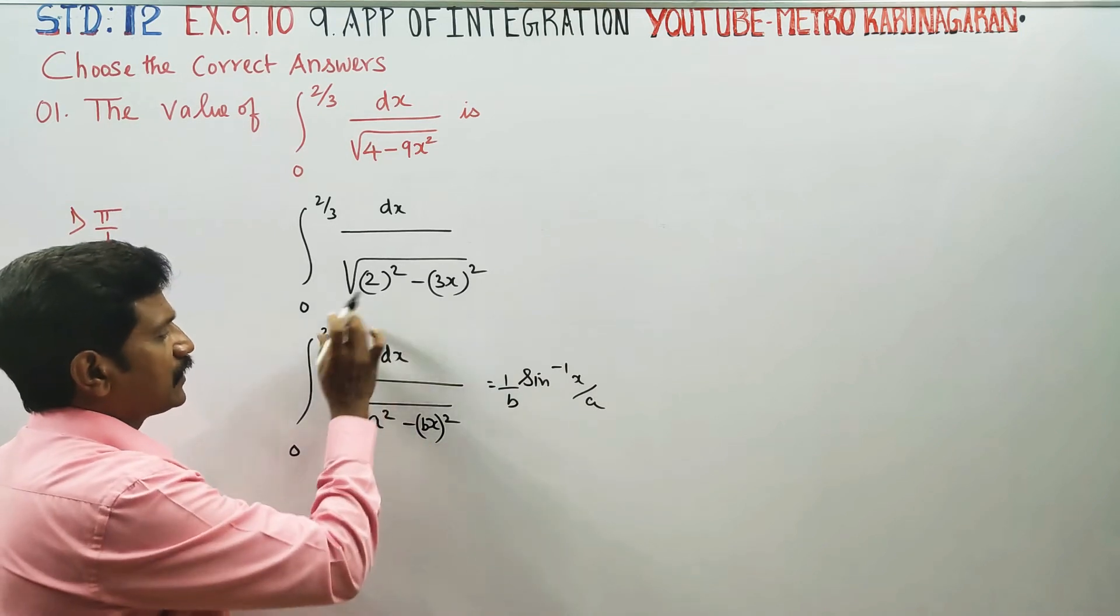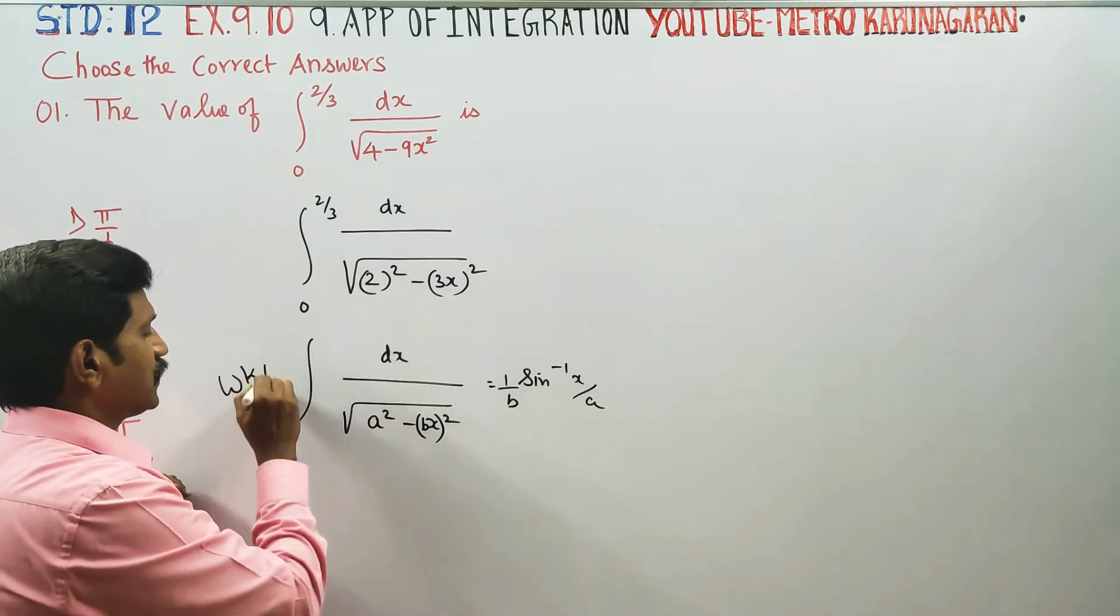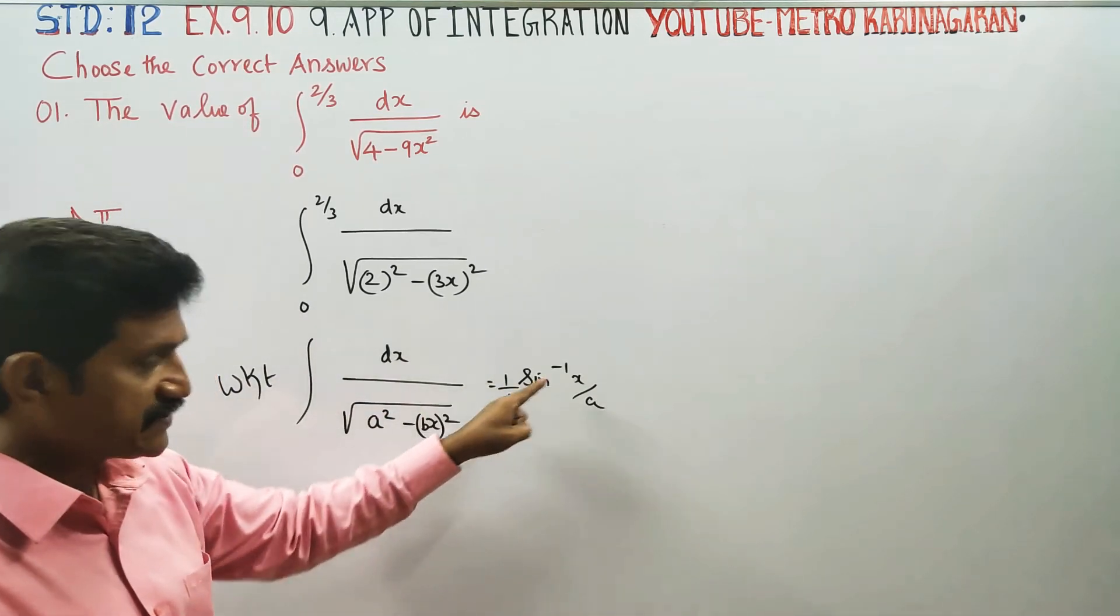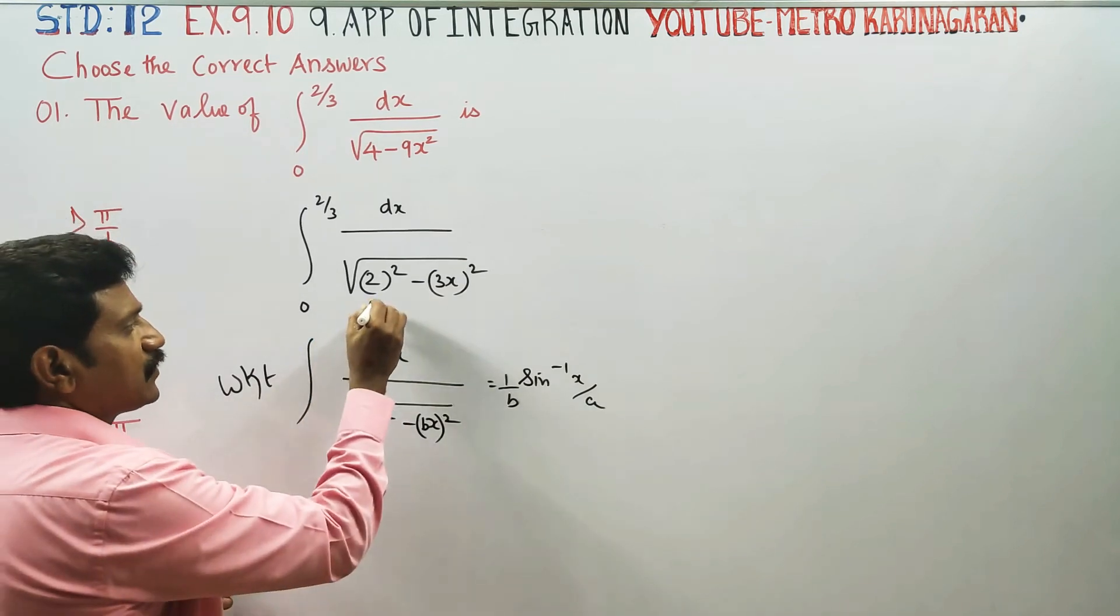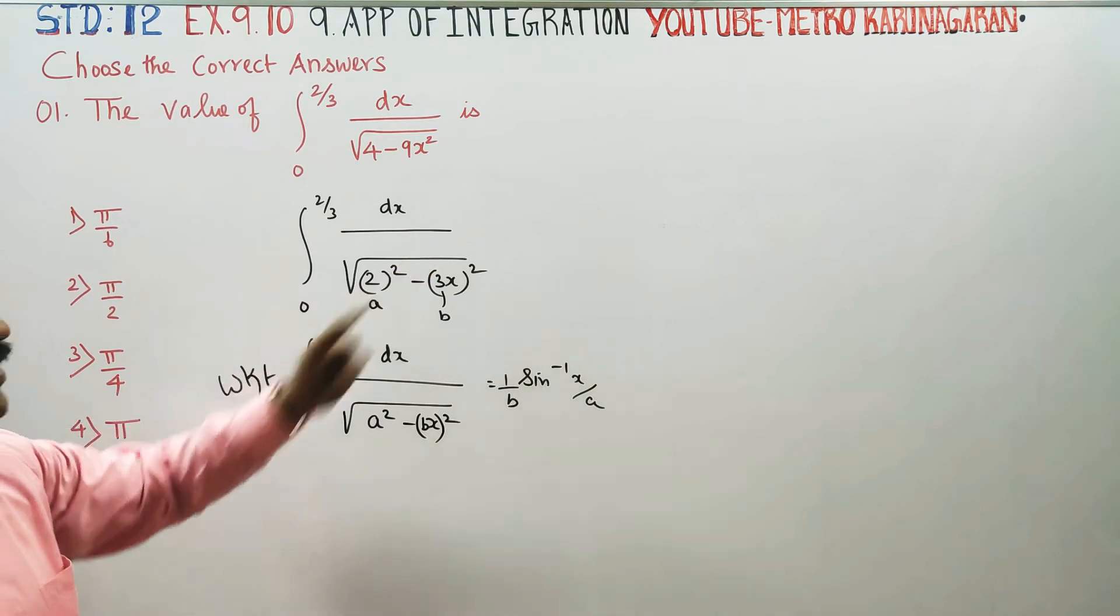General formula we know that dx by square root of a² minus bx² equals 1 by b sin inverse of bx by a. This is the formula.